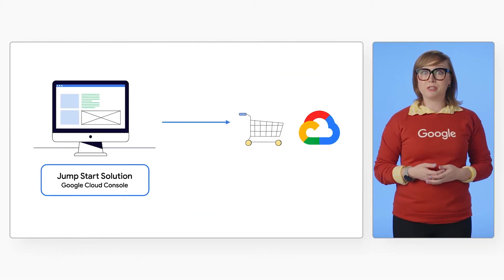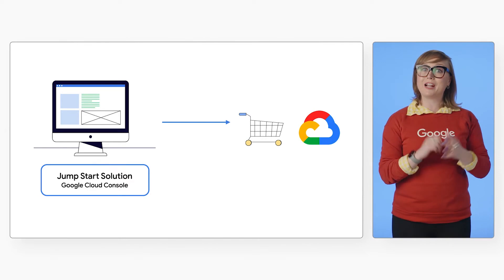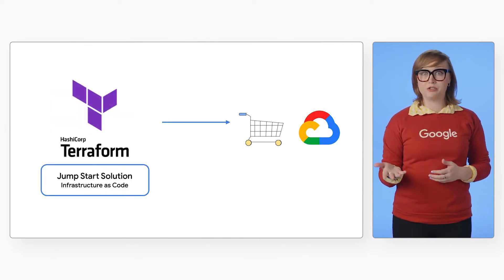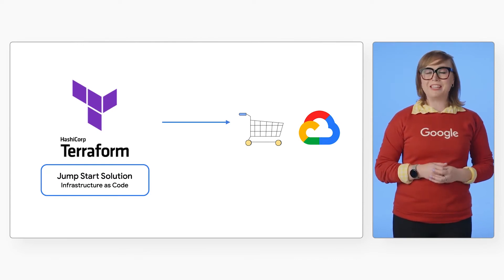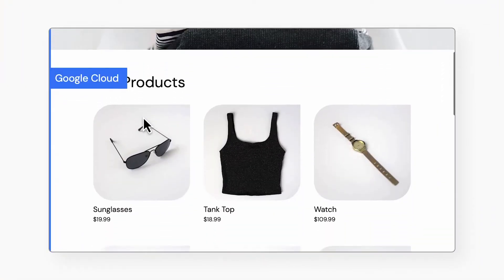This is where our jumpstart solution comes in. If this is your first time hearing of a jumpstart solution, they are packaged Google Cloud resources that can be quickly deployed directly from the Google Cloud console. If you'd like to make changes, we've also built the foundation of these solutions in Terraform, which you can pull locally and customize to your liking. While they are not intended for production use out of the box, they do contain patterns that can be adopted as you prepare a set of e-commerce microservices for production in Google Cloud.